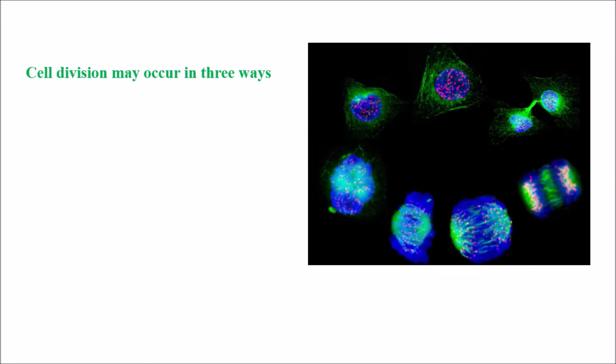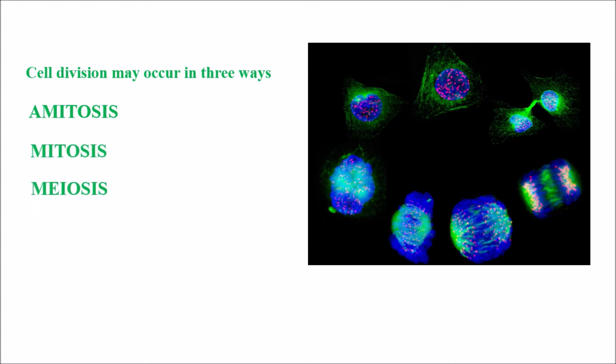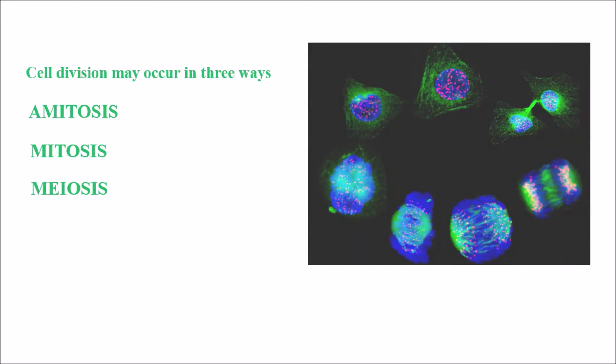Cell division may occur in three ways. The three types of cell division are: amitosis, mitosis and meiosis.